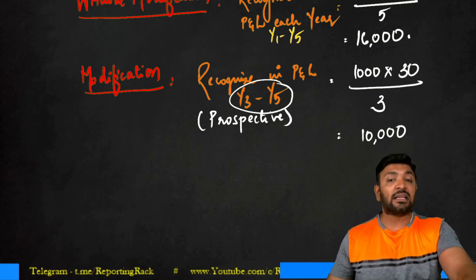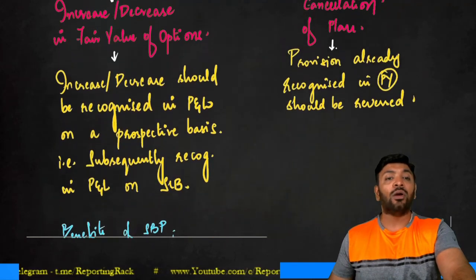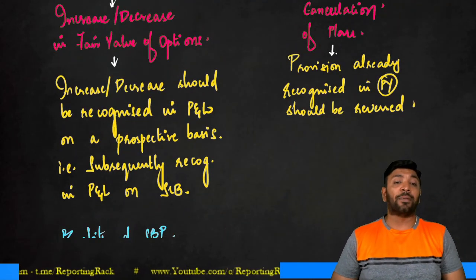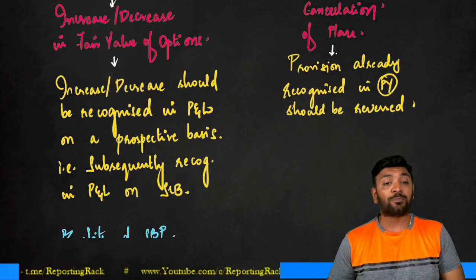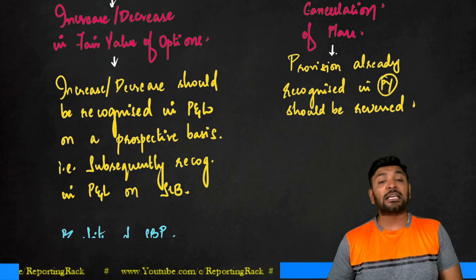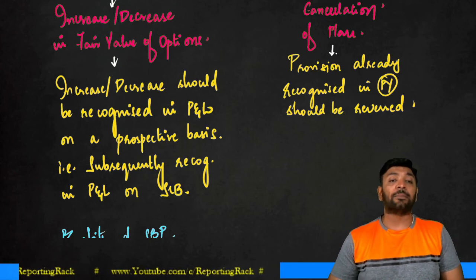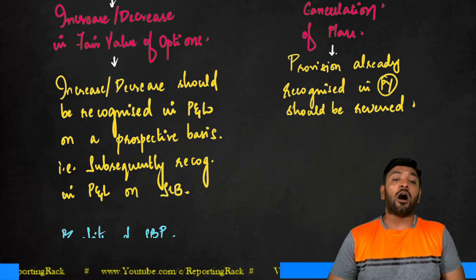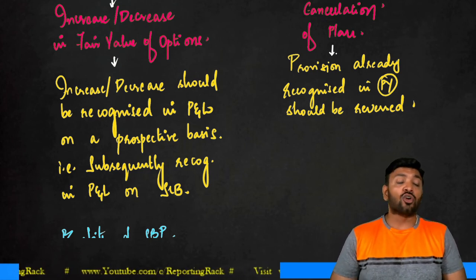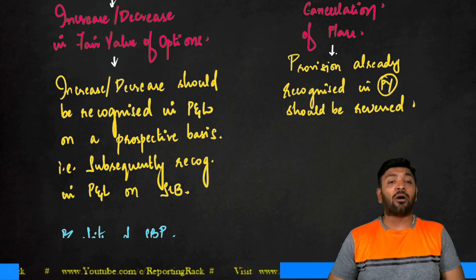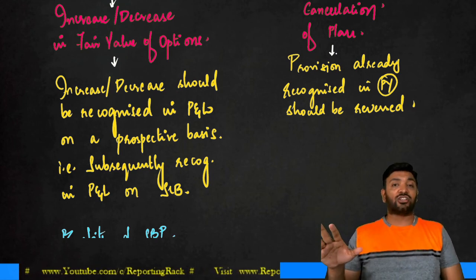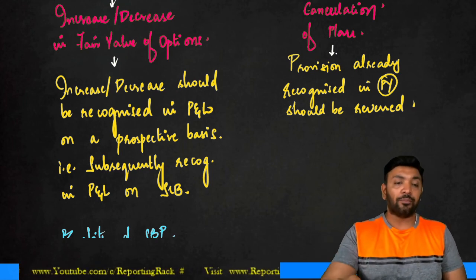This is the concept which emerges due to modification. Whenever there is an increase or decrease in fair value, it should be recognized in P&L on a prospective basis — meaning subsequently recognized in P&L on a straight-line basis. Whatever has already been done pre-modification will not change.